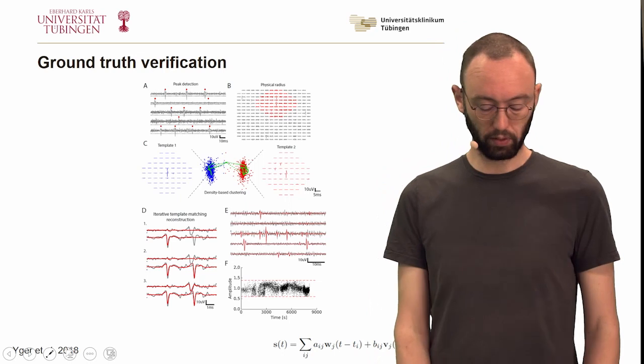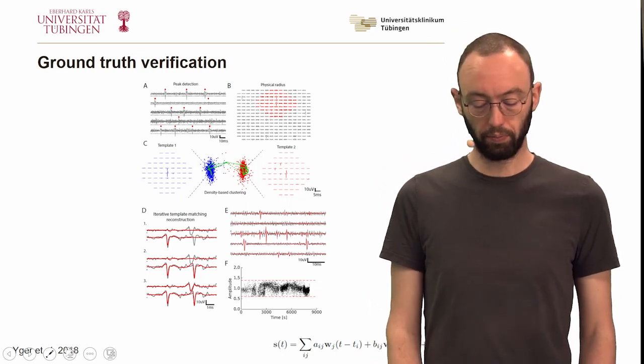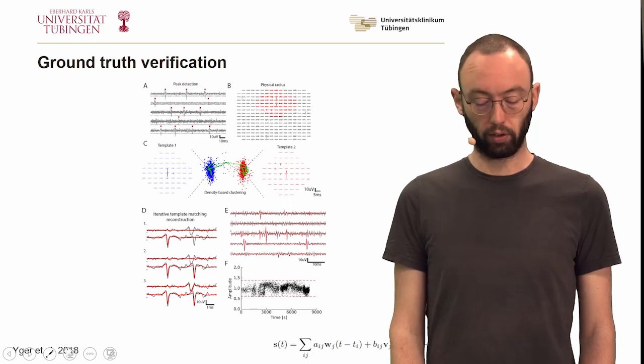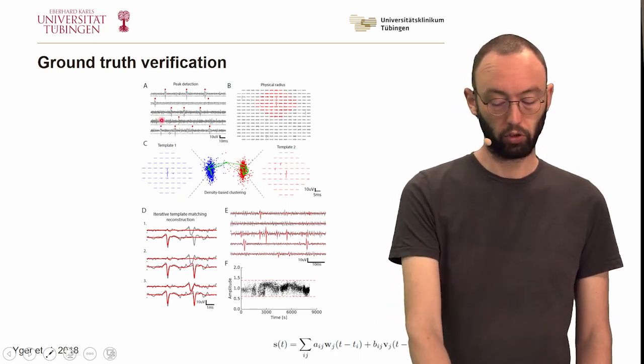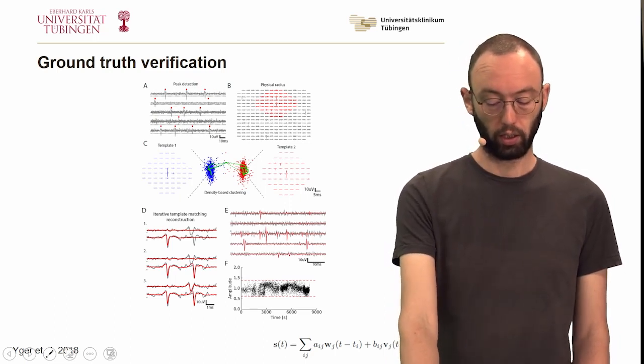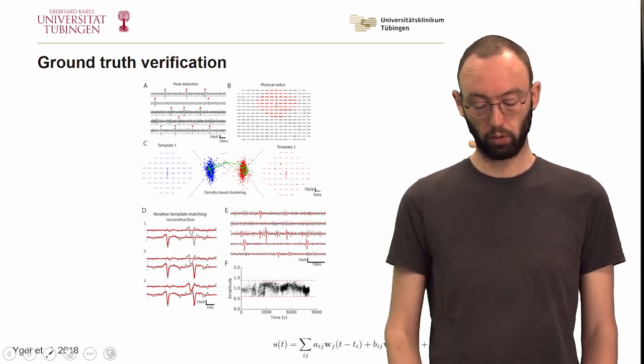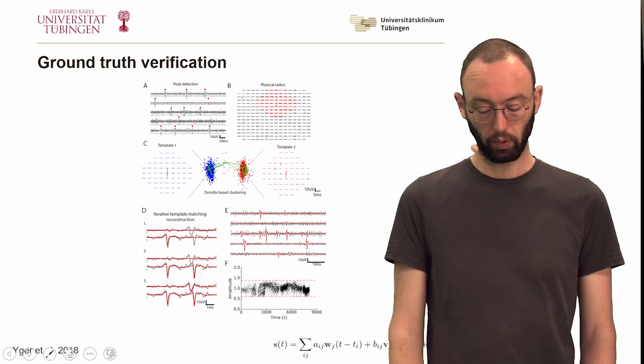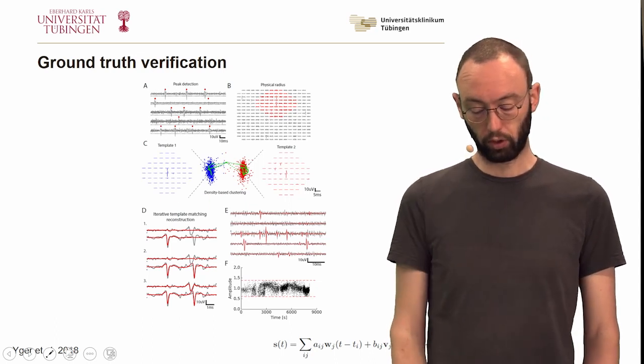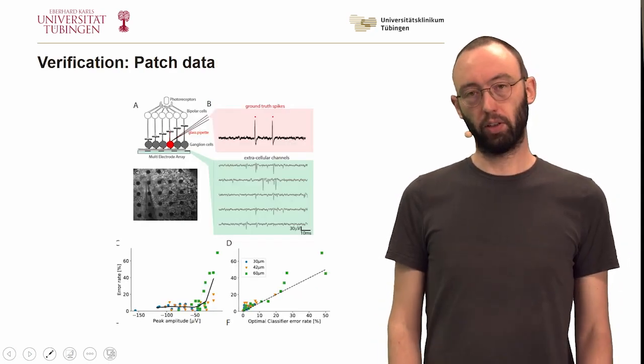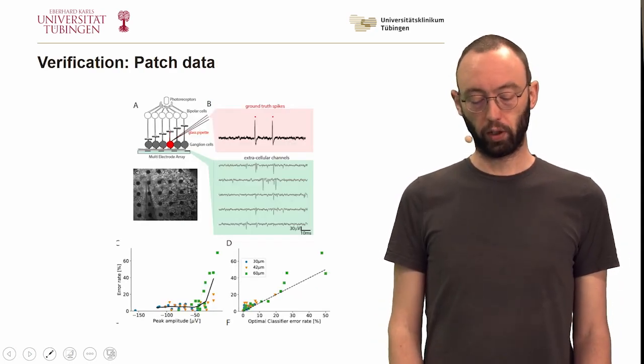In this case, the study by Iger et al., they performed multi-electrode array recordings from the retina. They performed peak detection like we did. They looked at a certain radius and used a template matching procedure with density-based clustering, and then an iterative procedure to identify the neurons.